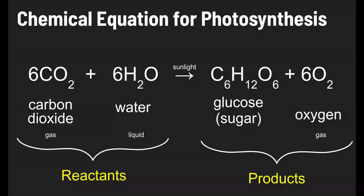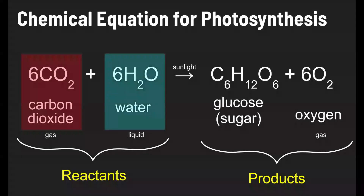Here's the chemical equation for photosynthesis. On the left side of the arrow you have the reactants, and on the right side of the arrow you have the products. So the plant takes in carbon dioxide, which is a gas that's in the air, and water, which is absorbed from the ground, and that water is a liquid.